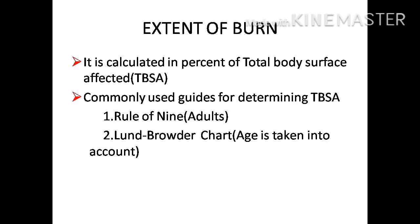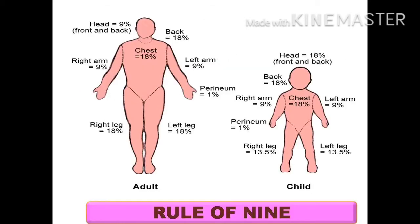The Lund-Browder chart is more specific because age is also taken into account. In the Rule of Nines, everything is a multiple of nine: the head is 9%, right and left arm are 9% each, chest is 18%, back is 18%, and both legs are 18% each. This is how the Rule of Nines determines total body surface area affected.